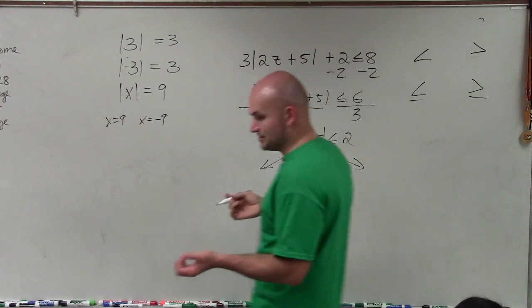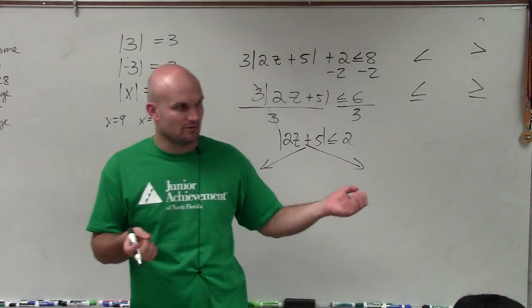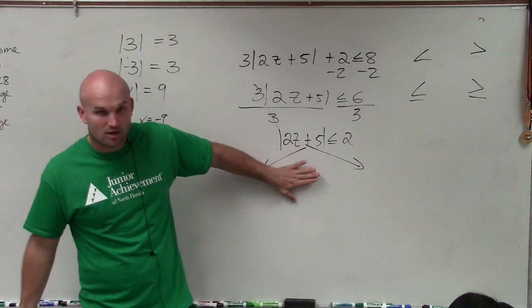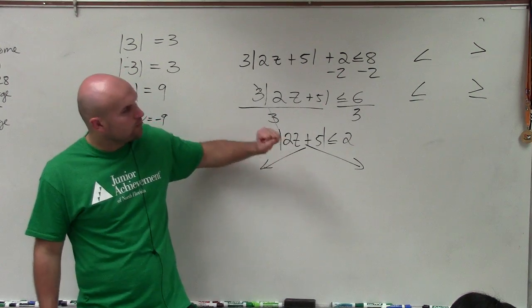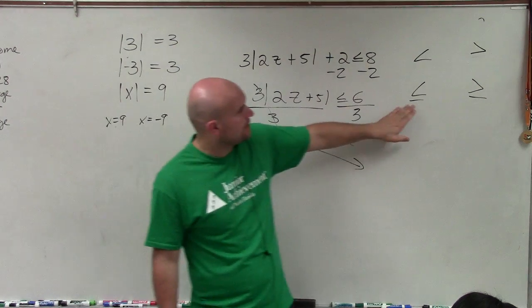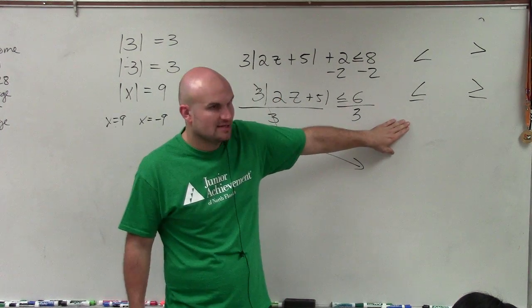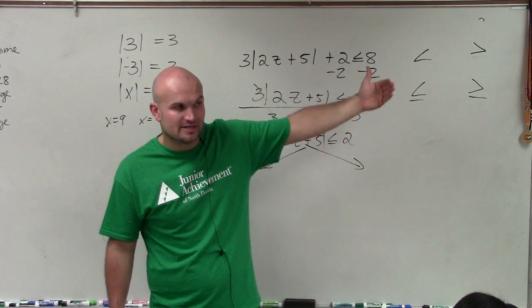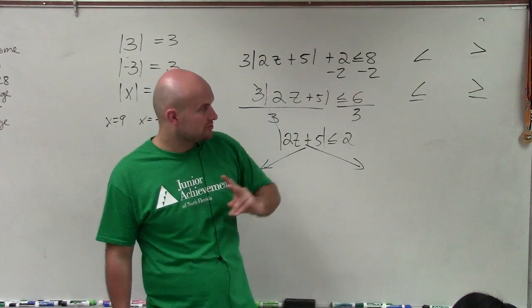So for absolute value equations, all we did was we set them equally, set one side, we did the positive and we did the negative. For inequalities, it gets a little bit more difficult. When we set up our two cases, depending on what your original inequality sign is, that's going to tell you what type of inequality you're creating, what type of compound inequality you're creating for your two cases.